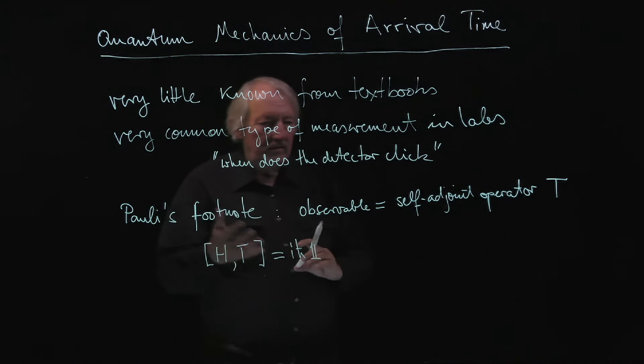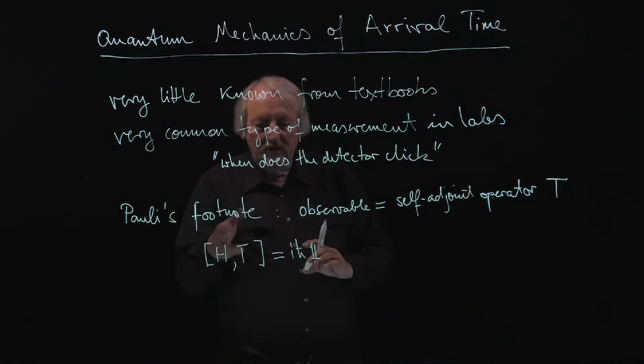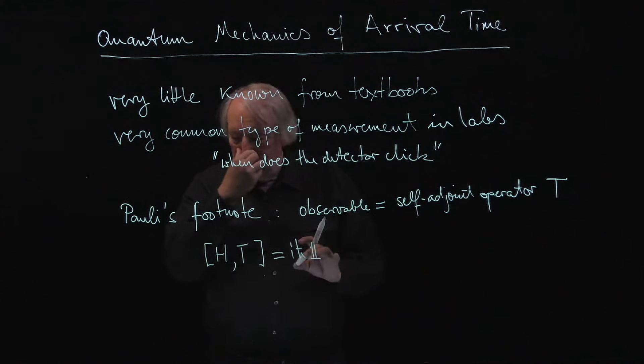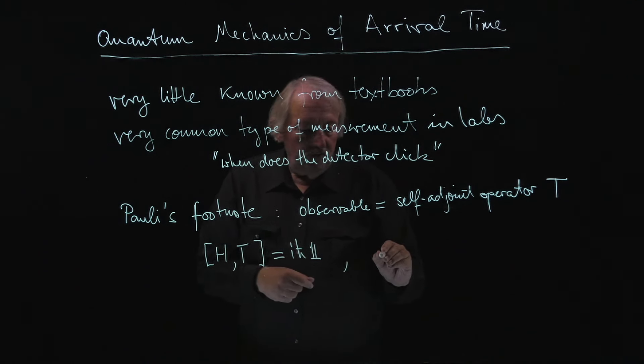And from that you would get Heisenberg-type uncertainty relations, and actually he mentioned time-energy uncertainty as being just completely analogous to position momentum. But if that is the case, we can look at the following.